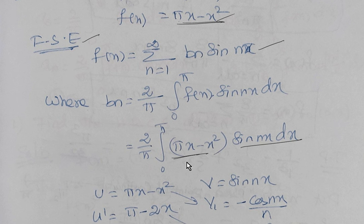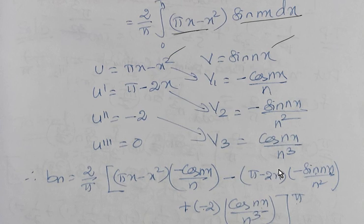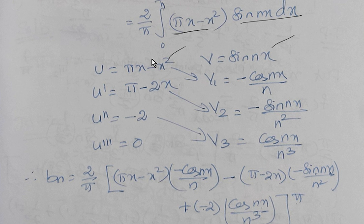So, substituting f(x) = πx - x², we get bn = (2/π)·∫₀^π (πx - x²)·sin(nx) dx. We apply integration by parts, setting u = πx - x² and v = sin(nx).